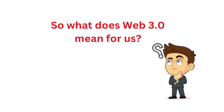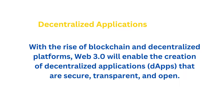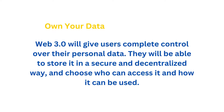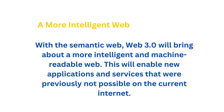So what does Web 3.0 mean for us? Decentralized applications: with the rise of blockchain and decentralized platforms, Web 3.0 will enable the creation of decentralized applications that are secure, transparent, and open. Own your data: Web 3.0 will give users complete control over their personal data. They will be able to store it in a secure and decentralized way, and choose who can access it and how it can be used. A more intelligent web: with the semantic web, Web 3.0 will bring about a more intelligent and machine-readable web, enabling new applications and services that were previously not possible on the current internet.